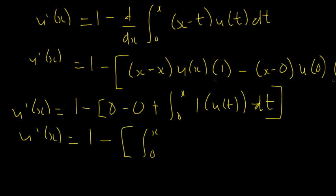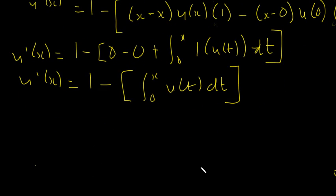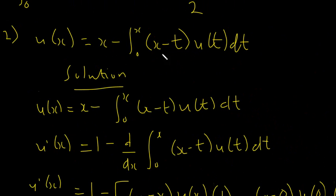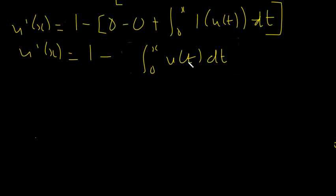So u'(x) has become equal to 1 minus the integral from zero to x of u(t) dt. We still see the integral sign here, and we need to get rid of all integrals to have a pure differential equation. So we differentiate this whole thing again.